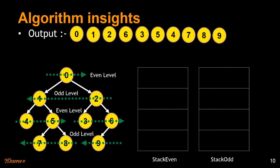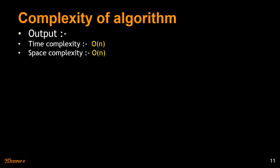Let's look at the complexity of the algorithm. The time complexity is O(n) because we are traversing the tree once and touching each node once. The space complexity is also O(n) because we use two stacks, and the maximum number of elements that can be present in a stack is the number of elements in the tree.